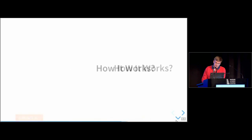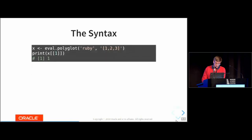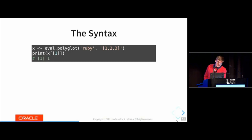I have two sections now: the first is more practical — how you can combine programming languages with GraalVM in practice — and the second is more theoretical, about how it works. Let me start with the practical one. This is the syntax for calling one language from another. This is R code — specifically FastR code; it won't run on GNU R. We use a built-in function called eval.polyglot. The first argument is a string identifying the language, the second argument is the source code to be executed. In this case we're executing a Ruby expression that returns a Ruby array, and we save it into the variable X in R as a Ruby object — no marshalling or copying.